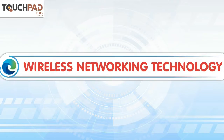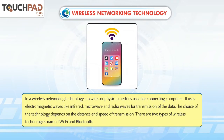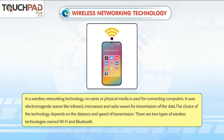Wireless Networking Technology. In a wireless networking technology, no wires or physical media is used for connecting computers. It uses electromagnetic waves like infrared, microwave, and radio waves for transmission of the data. The choice of the technology depends on the distance and speed of transmission.